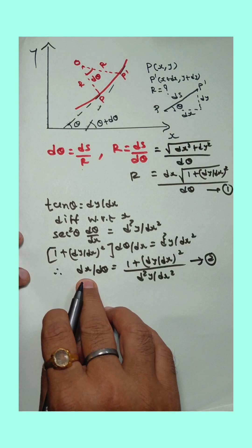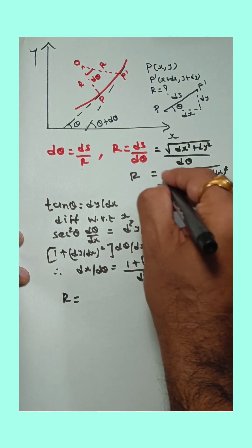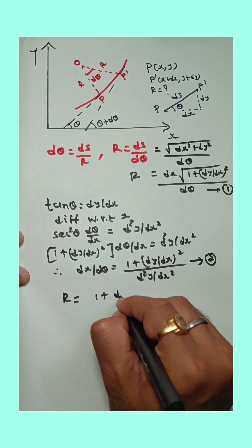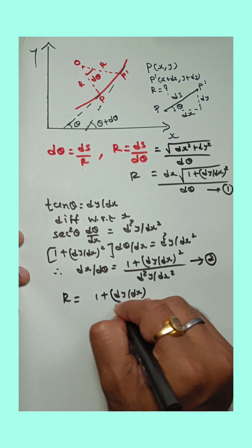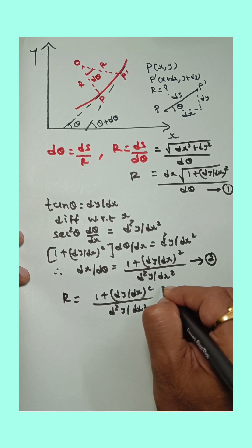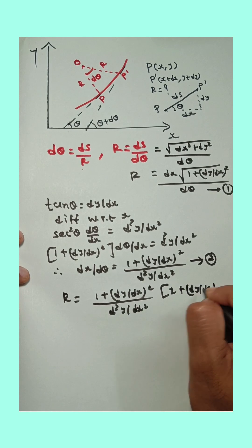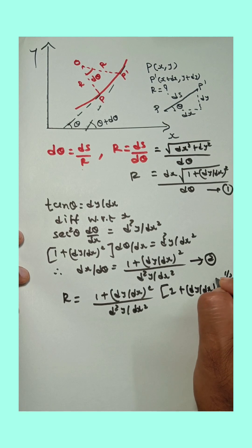Now substitute the value of dx upon dθ from equation 2 in equation 1. So radius of curvature is equal to—here dx upon dθ, that is 1 plus dy upon dx whole square divided by d square y upon dx square—into 1 plus dy upon dx all square raised to 1 by 2.